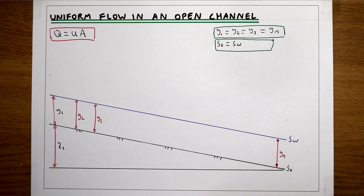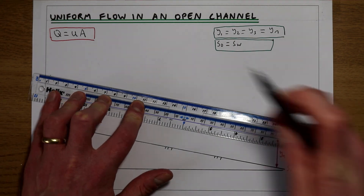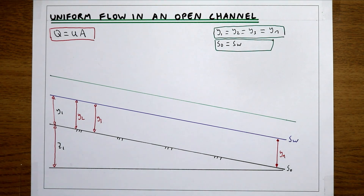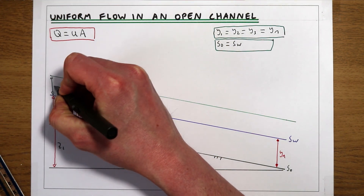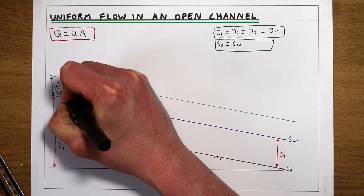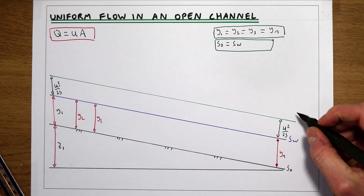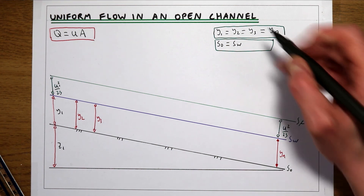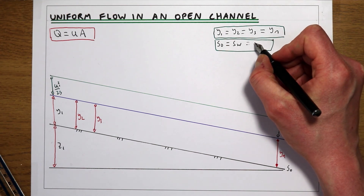So when we have a steady system where discharge isn't changing with time, if our flow depth isn't changing down the channel, we can draw an imaginary line to represent the velocity head, and we would expect that to also be the same. As well as our flow depth being the same at every point down the channel, our velocity and therefore our velocity head is also going to be the same. The gradient of the velocity head line is the same as the gradient of the water surface and of the bed.